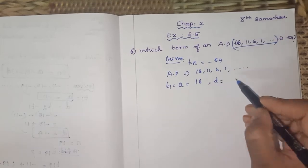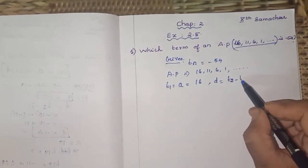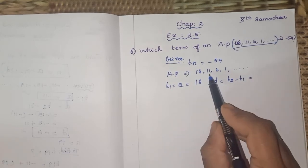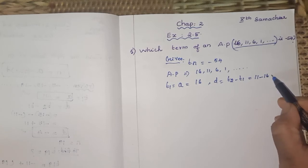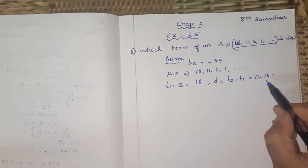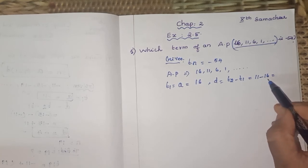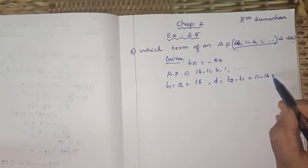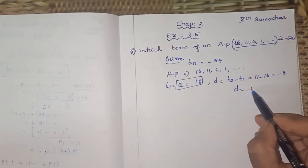Next, what is our D actually? It is common difference. So T_2 minus T_1, that is nothing but T_2 is what? 11 minus 16. 11 minus 16 is what? We can't subtract 16 from 11. So what will happen? Subtract it and put the negative sign because 16 is the greater number, so minus 5.